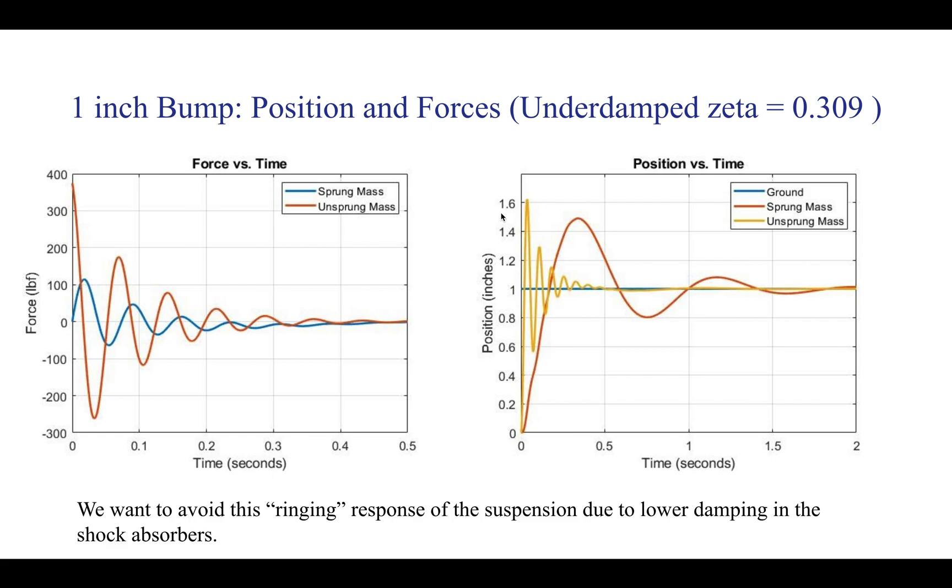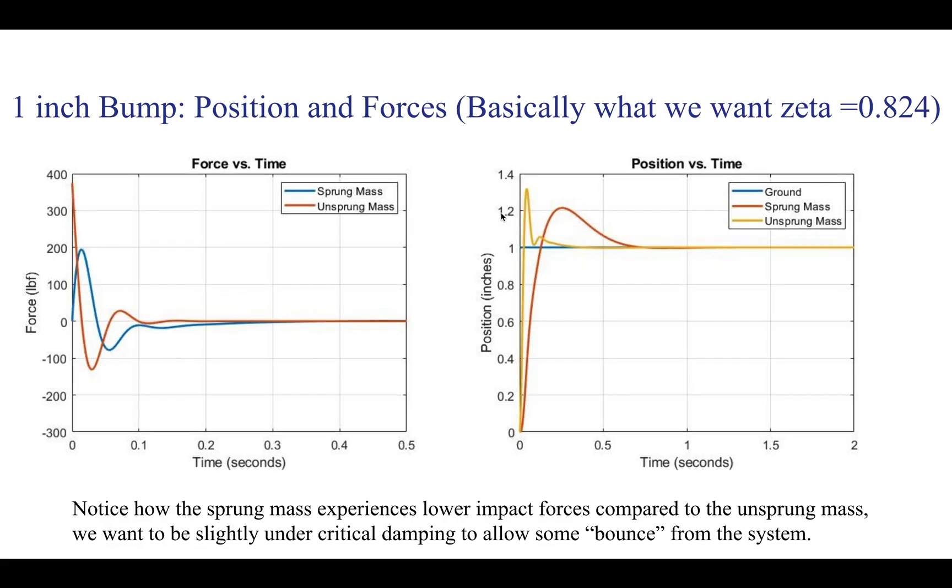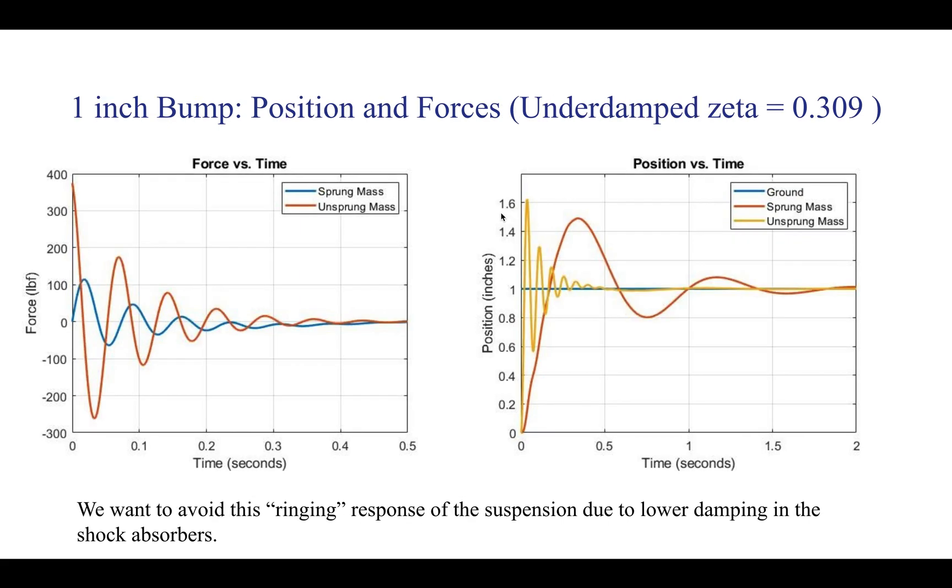We evaluated this at different zeta values to reiterate this point. We have our zeta at 0.309, and that's what we call underdamped. You can see judging by the forces and the position you can see the wild oscillatory motion once the car hits the bump. You can see these forces take a long time to die out versus previously where they died out within almost 0.1 seconds. Now you can see both the sprung mass and the unsprung mass are oscillating significantly. We want to avoid this sort of ringing response, and this is mostly due to lower damping in the shock absorbers. You want to make sure you have the right shock selected to avoid this sort of undesirable response.